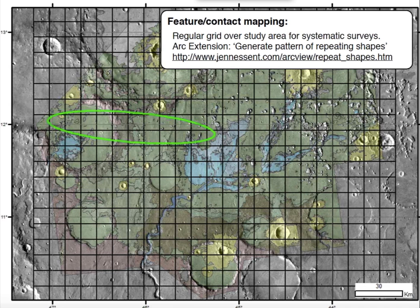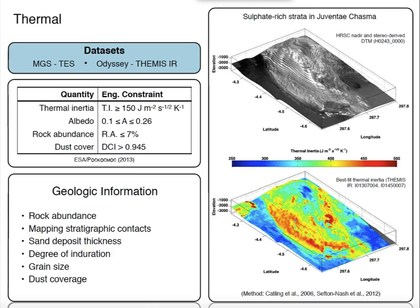To do systematic surveys of features and contacts over the landing sites, I found it easiest to make a grid — a regular grid in whatever projection you're in — which ensures that you've counted everything and missed nothing. That's important if you want to be thorough for choosing landing sites. There's a handy ARC extension called Generate Repeating Pattern of Shapes, which also does hexagons and other shapes and is very useful for this.